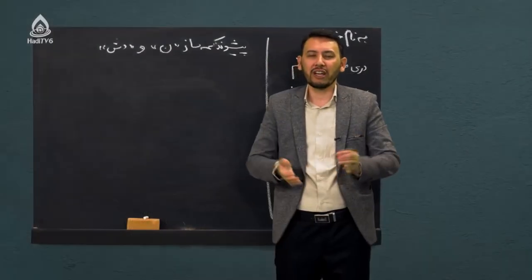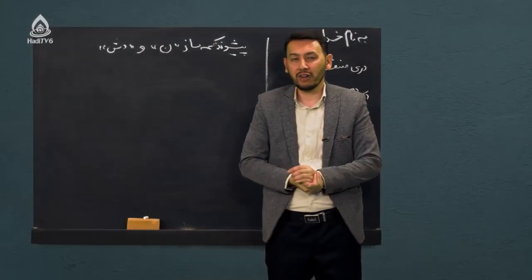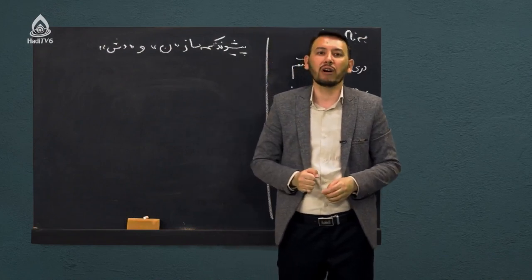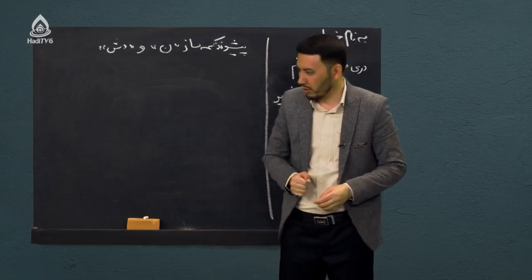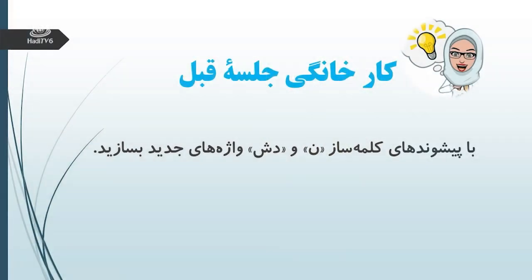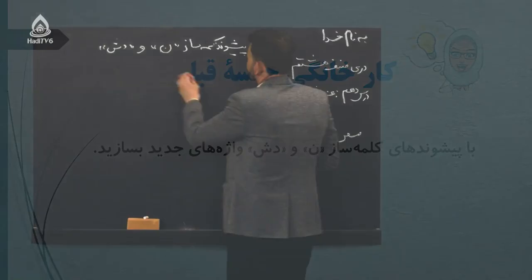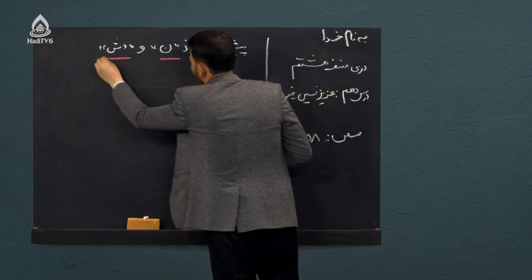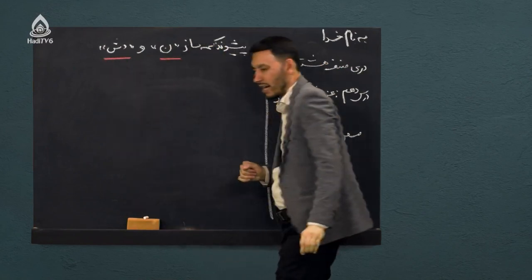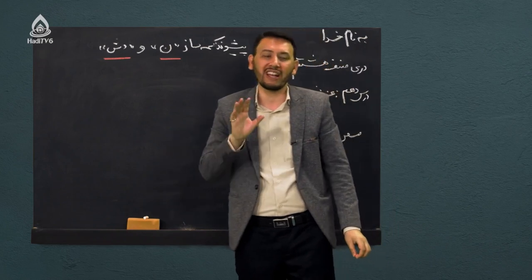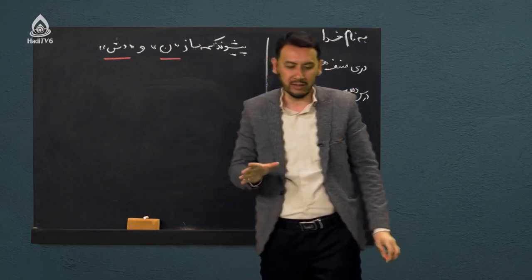شاگردان عزیز، قبل از اینکه وارد درس جدید شویم، کار خانگی جلسه قبل را مرور میکنیم. در جلسه قبل کار خانگی دادیم و خواستیم که با پیشوندهای کلمه‌ساز «نون» و «دوش» یک کلمه جدید بسازید. گفتیم پیشوندها دو نوع است.